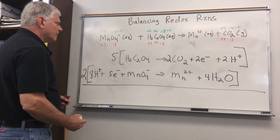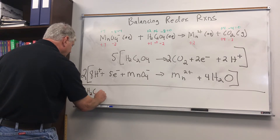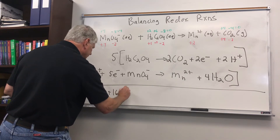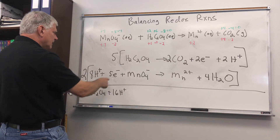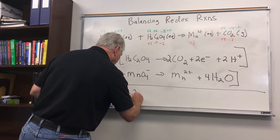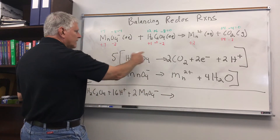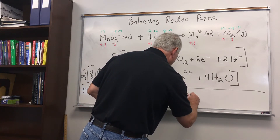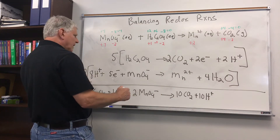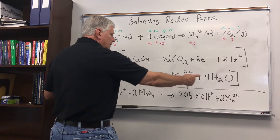Now I'm ready to add everything up. On the left side I have 5 oxalate molecules, 16 H+, and 2 MnO4-. The 10 electrons on the left and 10 on the right cancel. On the right side I have 10 carbon dioxide, 10 H+, 2 Mn2+, and 8 waters.